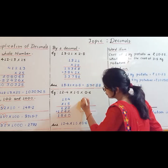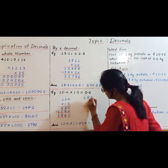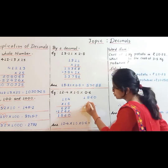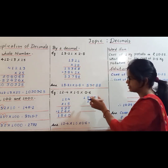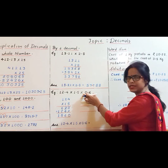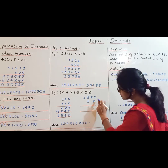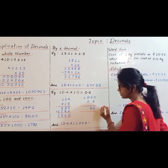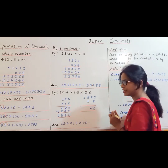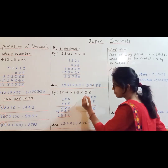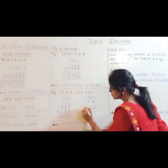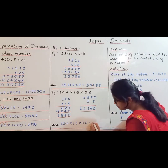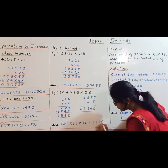Now we have to multiply this product, 1860, by the third number without the decimal point. Without decimal point it will be 6. Now multiply: 6 zeros are 0, 6 sixes are 36 carry 3, 6 eights are 48 plus 3 is 51 carry 5, 6 ones are 6 plus 5 is 11. So the product is 11160.